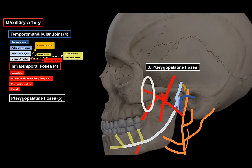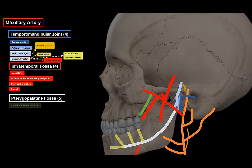In the pterygopalatine fossa there are five branches. First is the superior posterior alveolar artery, which runs behind the zygomatic arch along the maxillary tuberosity and enters the alveolar canals. It supplies the premolar and molar teeth, the gums, and the mucosa of the maxillary sinus, since it passes through the maxillary sinus.